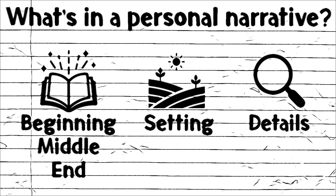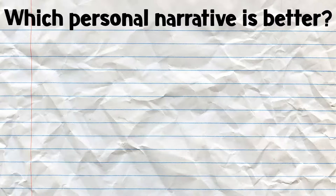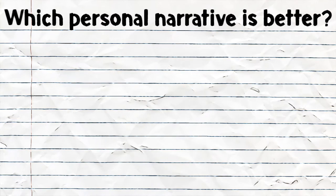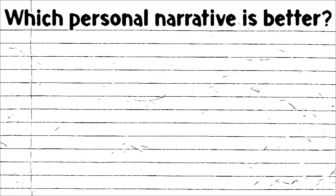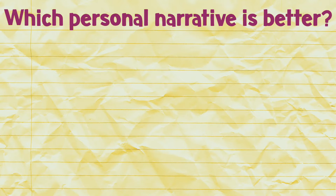Now let's talk about details a little bit more. We're going to look at two different personal narrative examples. These two will only focus on details — they don't have settings or a beginning, middle, and end. I want you to tell me which one you think has the best detail, and we'll talk about why afterward.